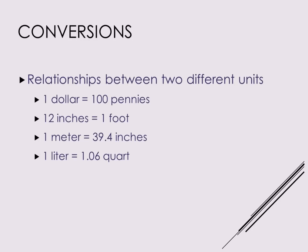Here are some more common conversion factors we've seen in our lives: a dollar is 100 pennies, 12 inches is one foot. Some more science-related ones we don't see quite as commonly: a meter is 39.4 inches, and a liter is 1.06 quarts. We also have to go back and forth between the English and the metric system, not just between the prefixes of the metric system, so we'll talk about examples of how we use all these conversion factors.